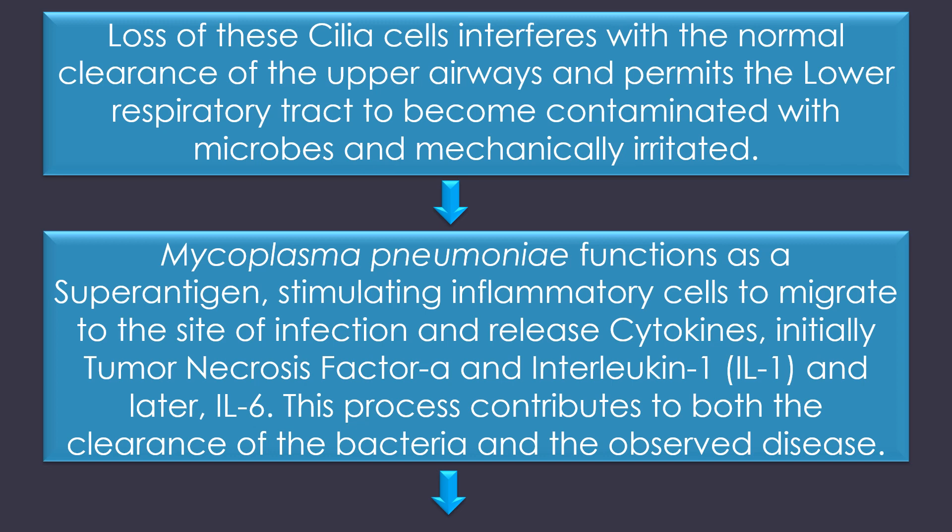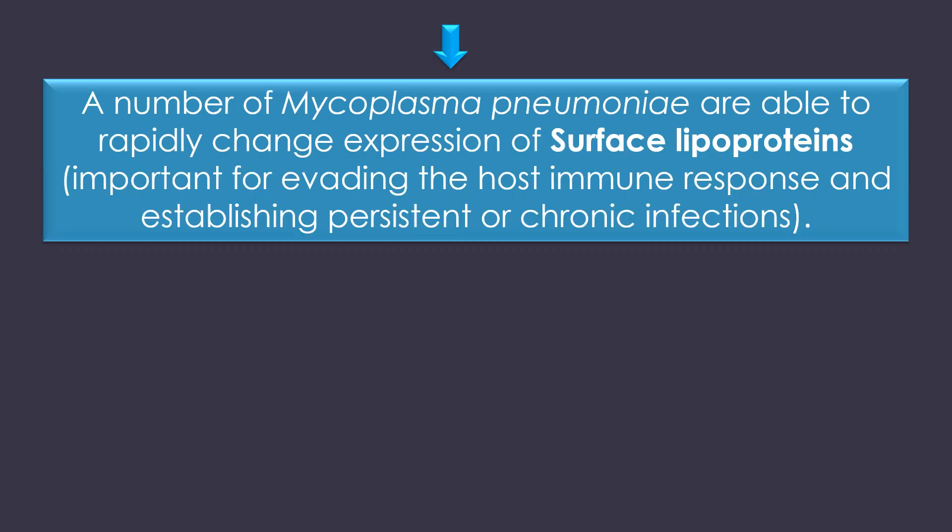This process is responsible for the persistent cough present in patients with symptomatic disease. Mycoplasma pneumoniae functions as a superantigen, i.e., an antigen that results in excessive activation of the immune system, stimulating inflammatory cells to migrate to the site of infection and release cytokines, initially tumor necrosis factor alpha and interleukin-1, and later interleukin-6. This process contributes to both the clearance of the bacteria and the observed disease. Additionally, Mycoplasma pneumoniae can rapidly change expression of surface lipoproteins, which is believed to be important for evading the host immune response and establishing persistent or chronic infections.